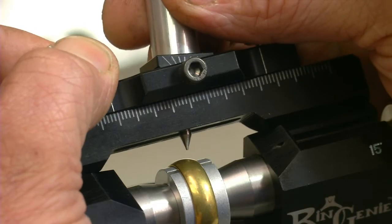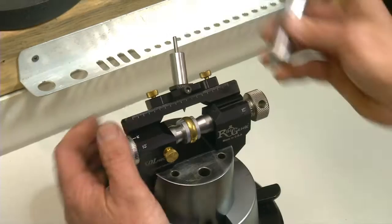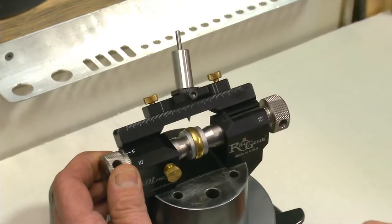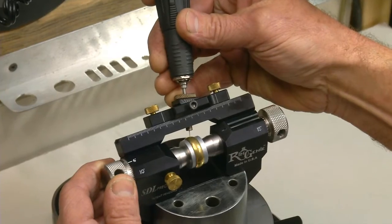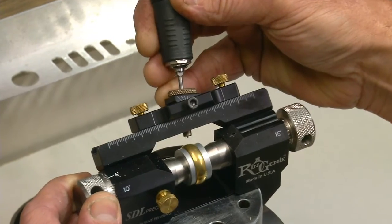Once mounted to the Ringgenie, we can set the desired angle, then tap the provided spring plunger to mark our drill point. We'll swap out the spring plunger for the drill bushing and drill into the ring at the precise angle we've chosen.